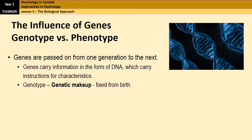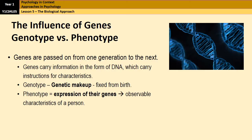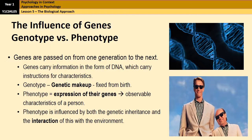Now there are two key phrases that you need to know for the A-level psychology spec, and that is the difference between genotype and phenotype. Your genotype is your genetic makeup, which is fixed from birth. Your phenotype, however, is how that gene is expressed in observable characteristics. And very importantly, phenotype is influenced by both your genetic inheritance and also the interaction of that gene with the environment.